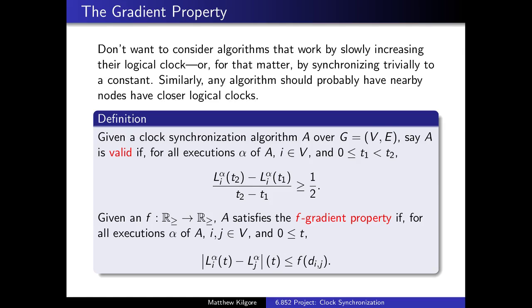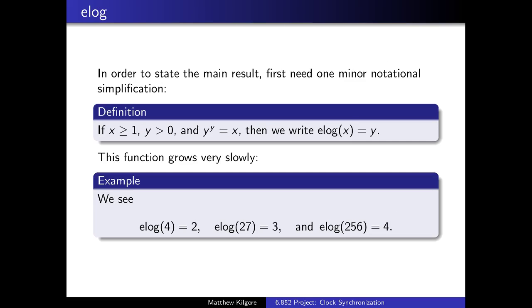We're going to throw out the possibility of trivial algorithms by requiring that the skew increase at a rate greater than half. We're also going to require a gradient property, which means that for some F, the skew between two nodes is bounded by F of the distance between those nodes. We're going to prove some properties about it. We need to define one minor notation: x is greater than 1, y is greater than 0, and 2^y is greater than x, and we write α(x) = y. This is very slowly growing: α of 4 is 2, α of 2^73 is 3, and α of 2^65536 is 4.